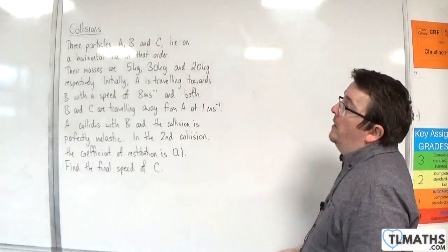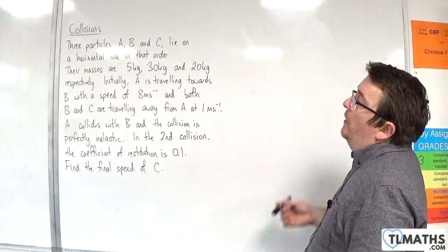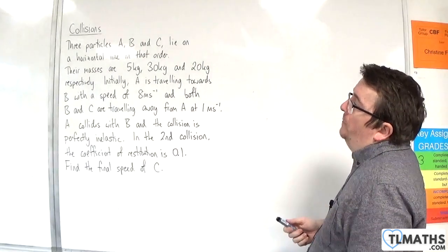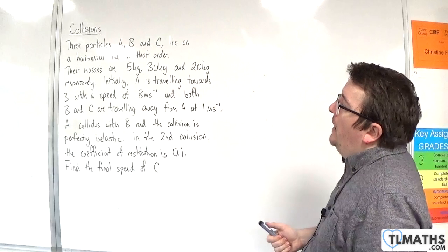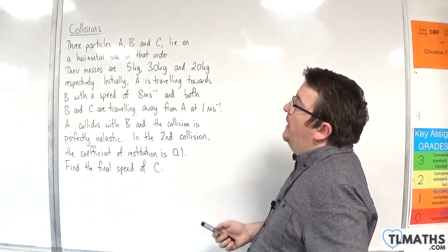In this problem, we have three particles A, B, and C lie on a horizontal line in that order. Their masses are 5 kilos, 30 kilos, and 20 kilos, respectively.